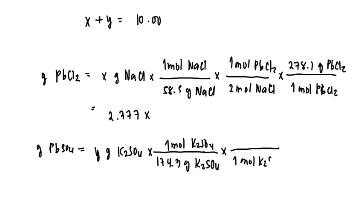By the mole ratio, one mole of K2SO4 will produce one mole of PbSO4. We multiply this by the molar mass of PbSO4, which is 303.3. Solving this, we get 1.74y.